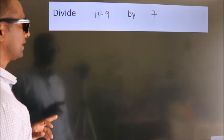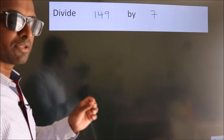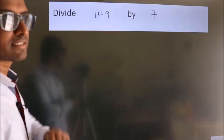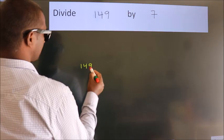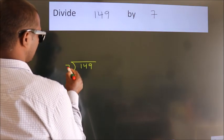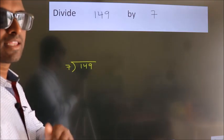Divide 149 by 7. To do this division, we should frame it in this way. 149 here, 7 here. This is your step 1. Next.